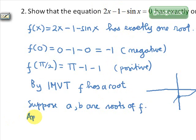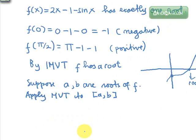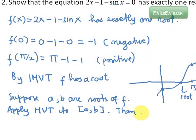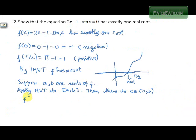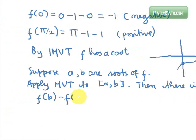Apply the mean value theorem to the interval [a,b]. Then according to the mean value theorem, there is c in (a,b) such that f(b) minus f(a) equals f prime of c times (b minus a).